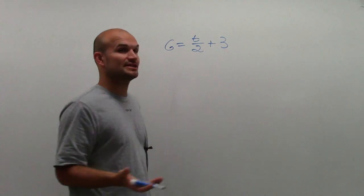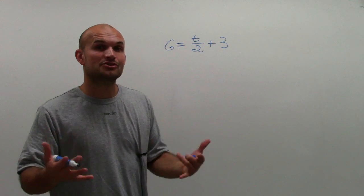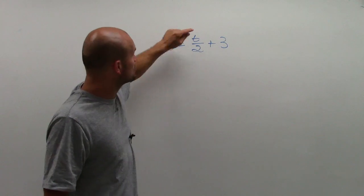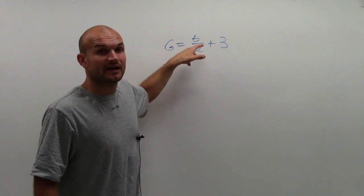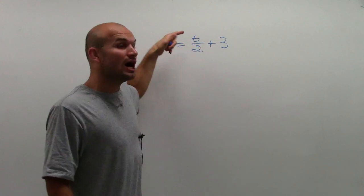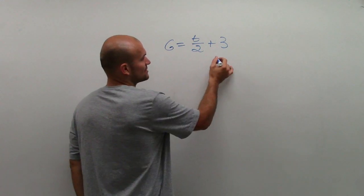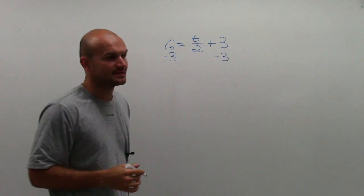So I look and see for any addition and subtraction that's happening to my variable. What is happening to my variable that I need to undo? So remember, I can get this variable by itself. We need to isolate the variable. So I have a 3 being added to my t. So I'm going to have to subtract the 3 on both sides.